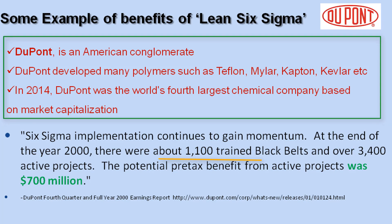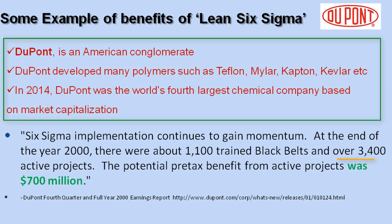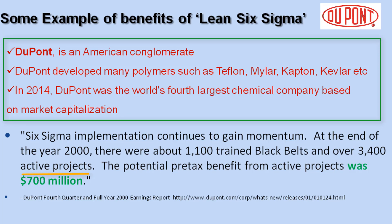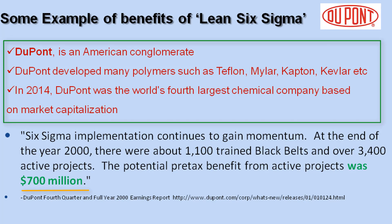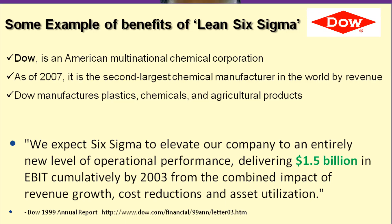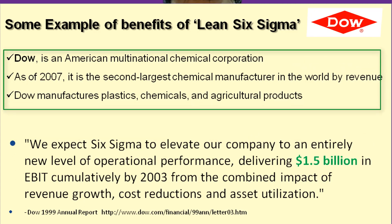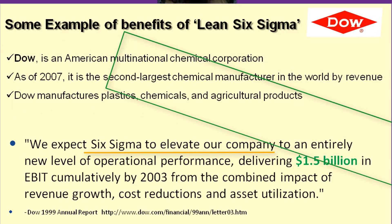The next example is from DuPont, also a very large multinational company. In the year 2000, they had around 1,100 trained Black Belts working on 3,400 active projects, expecting potential tangible gains of 700 million dollars. The third example is the company Dow, which is in chemicals and other businesses. Through their Six Sigma initiative, in the year 2003 they got tangible gains of 1.5 billion dollars in their EBIT.